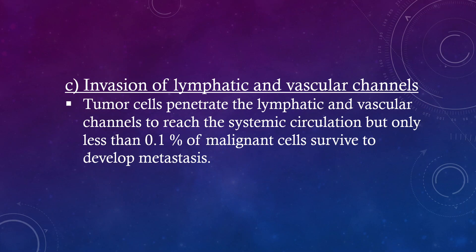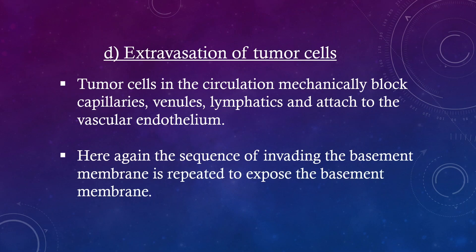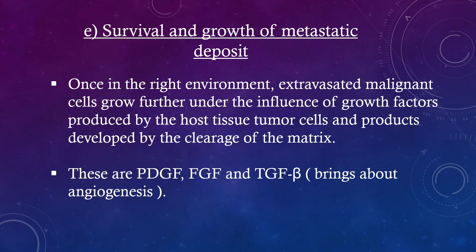Invasion of lymphatic and vascular channels: tumor cells penetrate the lymphatic and vascular channels to enter the systemic circulation, but only less than 0.1% of malignant cells survive to develop metastasis. Extravasation of tumor cells: tumor cells in the circulation mechanically block capillaries, venules and lymphatics and attach to the vascular endothelium; the sequence of invading the basement membrane is then repeated. Survival and growth of metastatic deposit: once in the right environment, extravasated malignant cells grow further under the influence of growth factors — including PDGF, FGF and TGF-beta — produced by host tissue, tumor cells and products of matrix cleavage, bringing about angiogenesis.